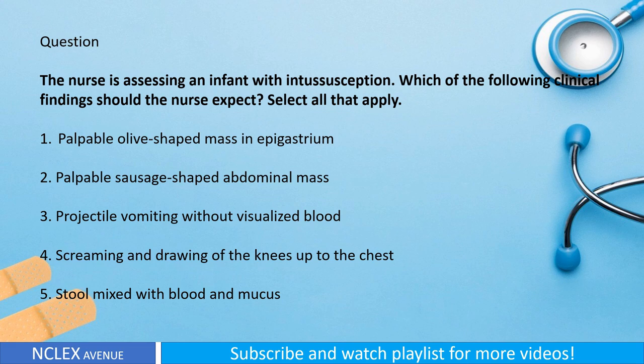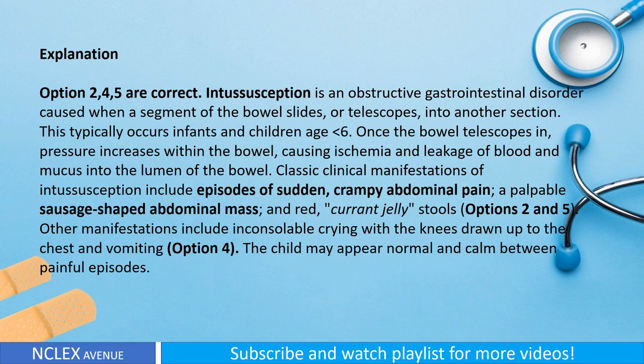Question: The nurse is assessing an infant with intussusception. Which of the following clinical findings should the nurse expect? Select all that apply. One: palpable olive-shaped mass in the epigastrium. Two: palpable sausage-shaped abdominal mass. Three: projectile vomiting without visualized blood. Four: screaming and drawing of the knees up to the chest. Five: stool mixed with blood and mucus. Explanation: Options two, four, and five are correct.